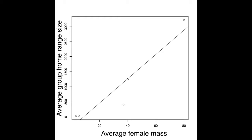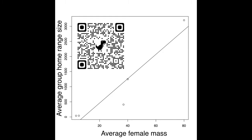Let's say you wanted to test whether there is a positive relationship between the mass of females of primate species and the average home range sizes of those species. The overall idea is to see whether there is something fundamental about primates where larger females leads to larger home range sizes. Each data point represents a species of primate, where home range sizes for different groups were averaged together, and masses of females were averaged together to create one number per species.